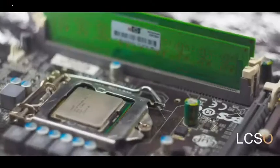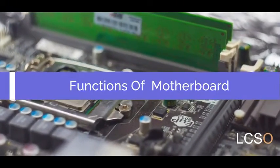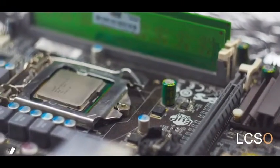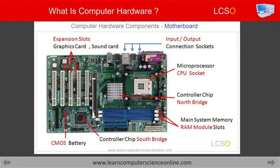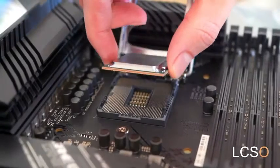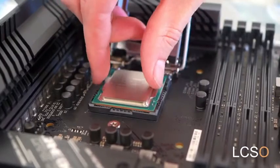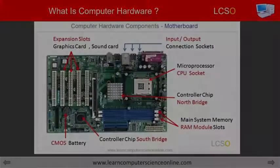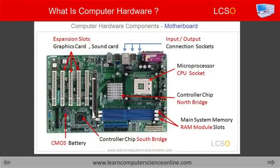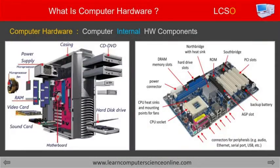The next hardware component is the motherboard. The computer motherboard is the main printed circuit board used to assemble and interconnect various computer system components. The motherboard provides connection sockets for the microprocessor CPU, main memory RAM, secondary memory unit called hard disk, graphics card, and the controller chips which connect the various input and output devices connected to the computer.